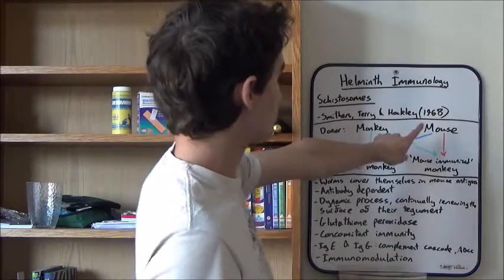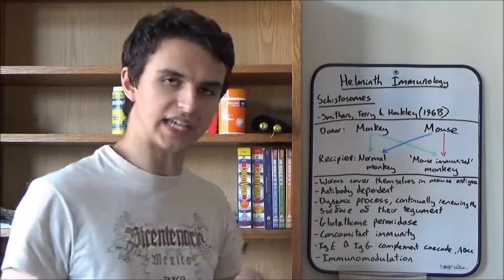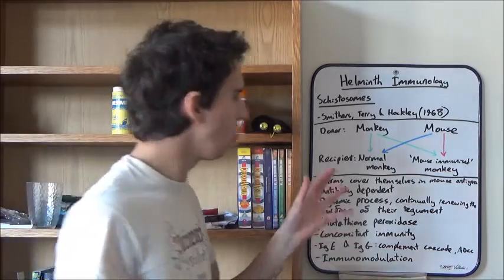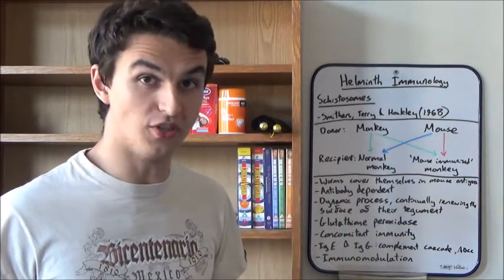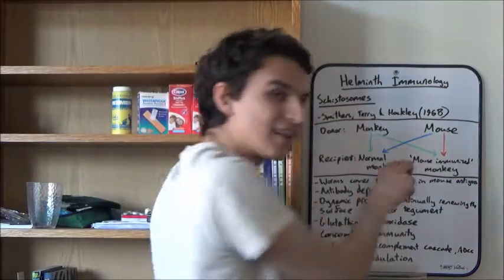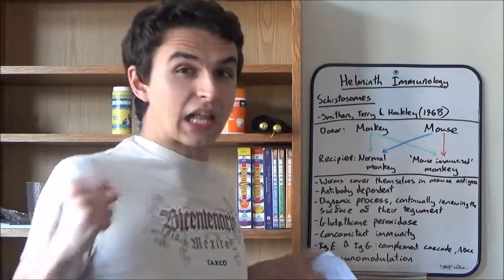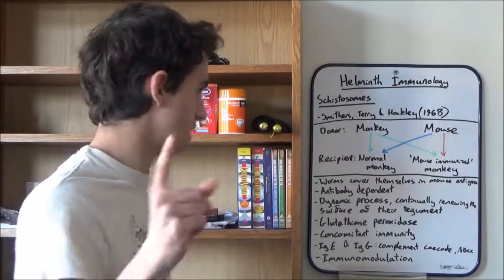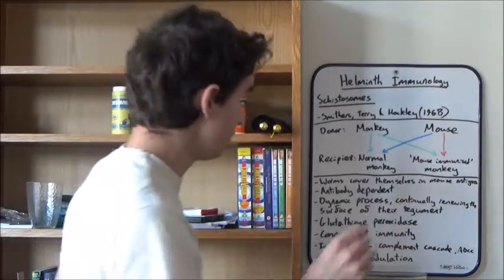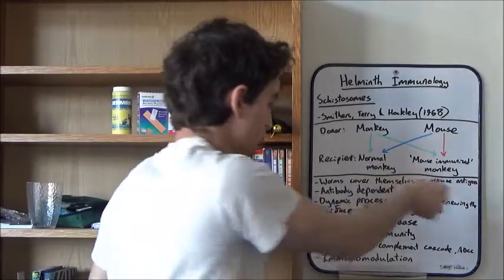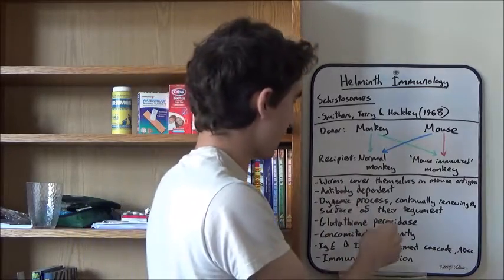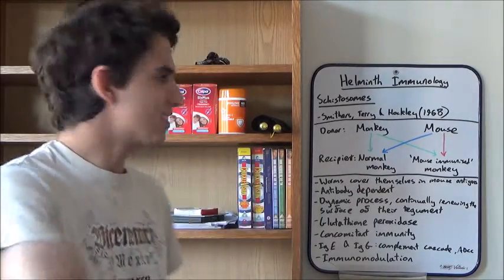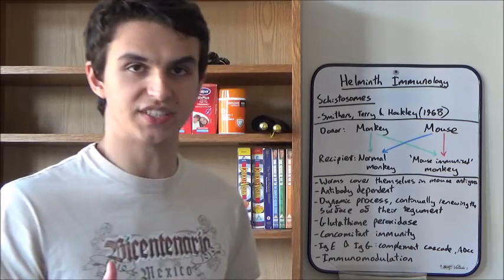Now, if schistosomes were moved from a mouse to a mouse-immunised monkey, that red arrow represents failure. No schistosomes got established and they were all killed off within 44 hours. This suggests that the worms growing inside the mice had mouse antigens very closely associated with them. To develop this, you know, quick response to kill all the worms. Now, if you take the serum from a mouse-immunised monkey and transplant it into a normal monkey, you get the same response. Failure in infection. And this is suggesting that this response is all to do with antibodies, a humoral response.